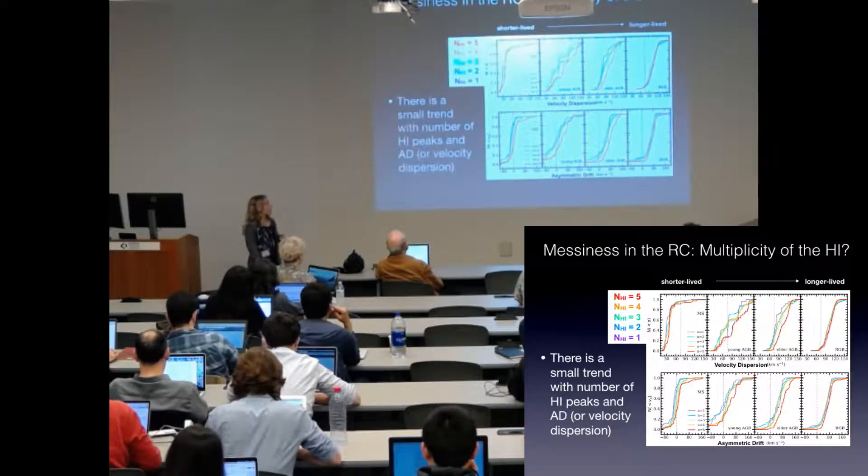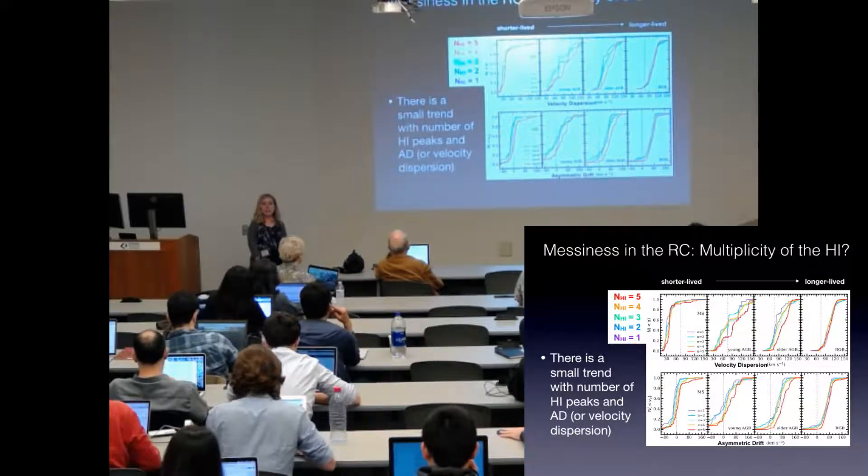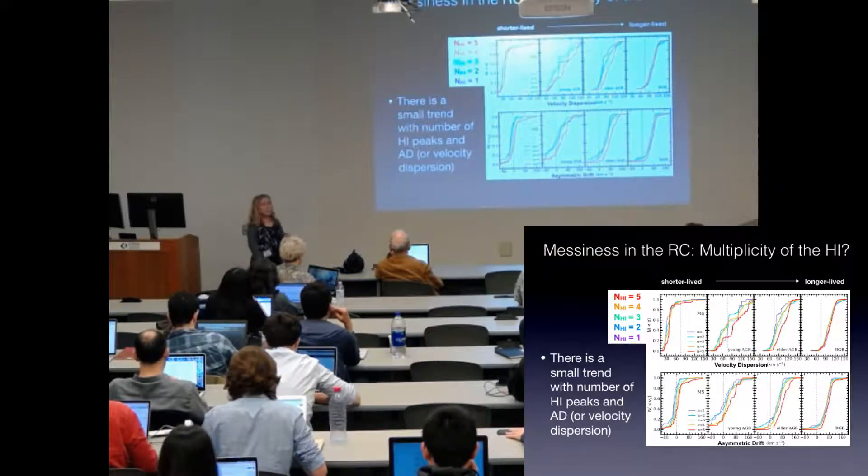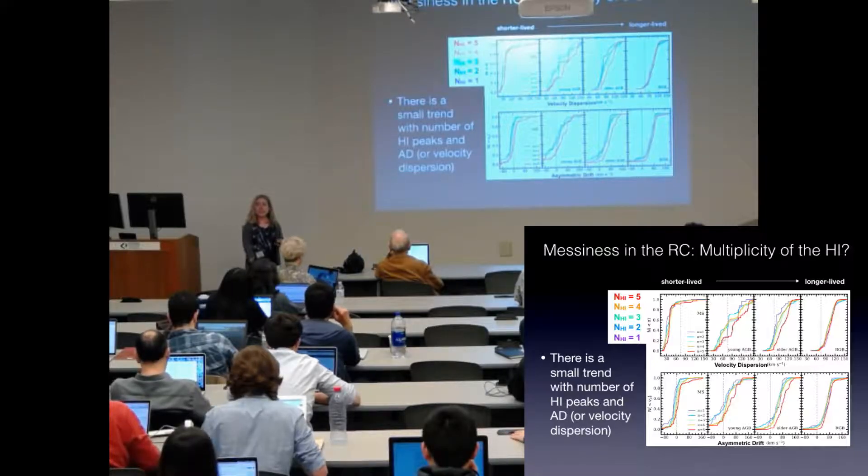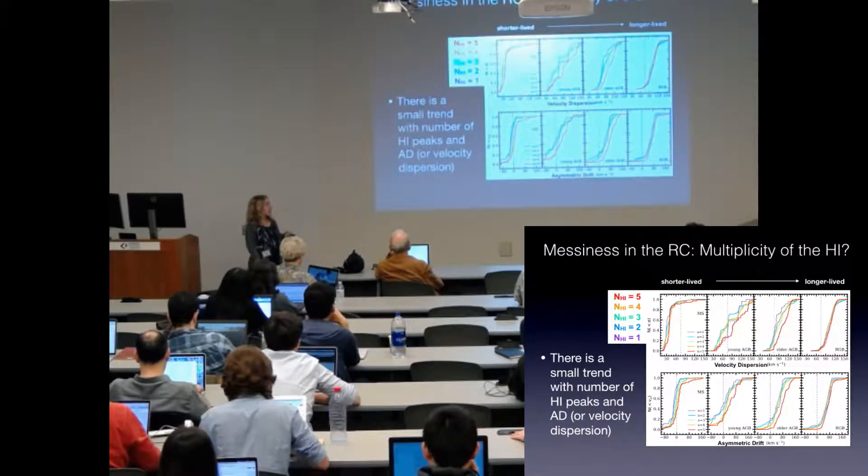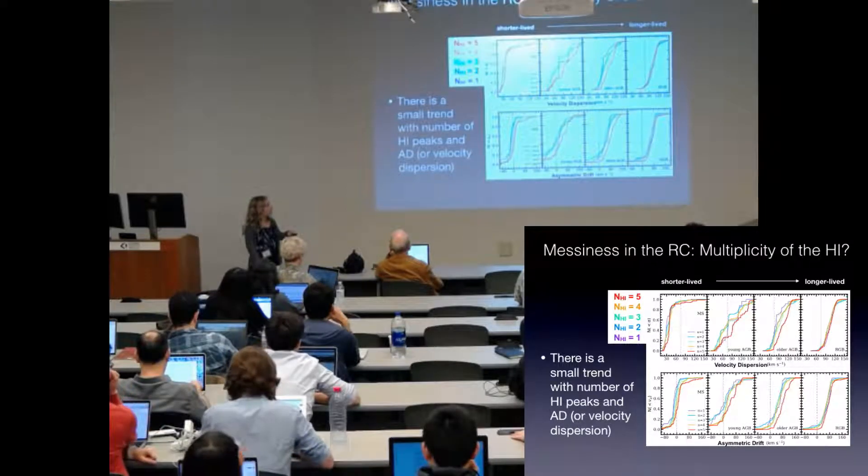You can see there is a small trend with number of peaks in the H1 spectrum. As the line of sight becomes more complex, you do get a slightly greater magnitude of velocity dispersion or asymmetric drift, and you get this nice rainbow color.